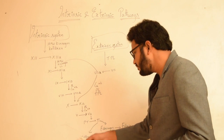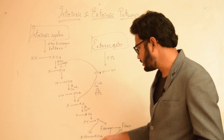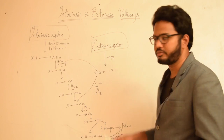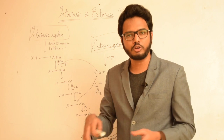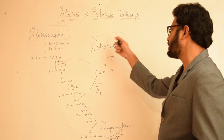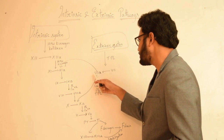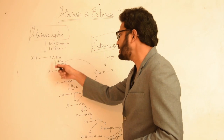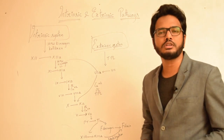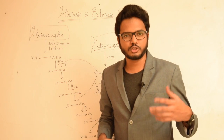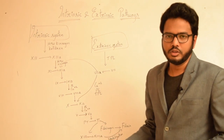Factor 5 in turn converts prothrombin to thrombin, and this thrombin converts fibrinogen to fibrin. Thrombin also activates factor 13, the fibrin stabilizing factor, which stabilizes the fibrin formed. This completes the intrinsic pathway leading to the common pathway. In the extrinsic pathway, tissue thromboplastin activates factor 7, and this activated factor 7 activates factor 10 in the presence of calcium ions, phospholipids, and tissue thromboplastin — again leading to the common pathway.